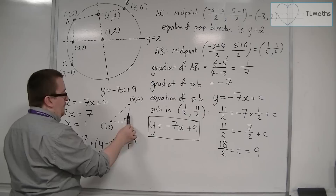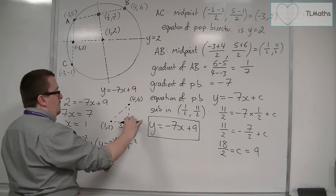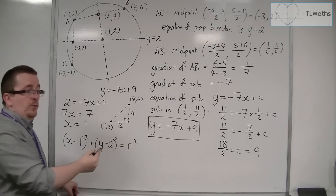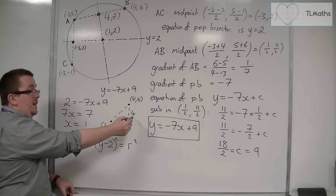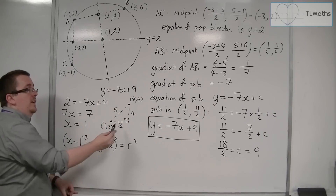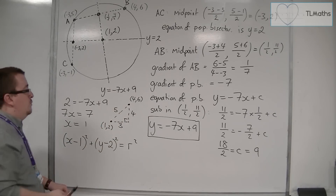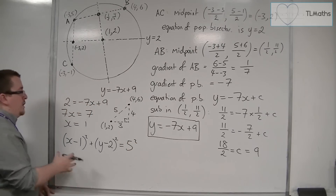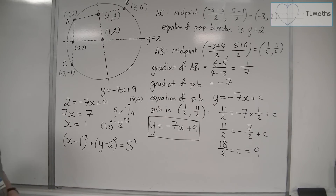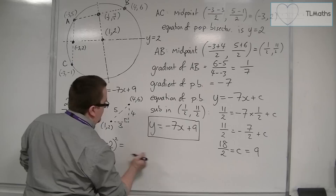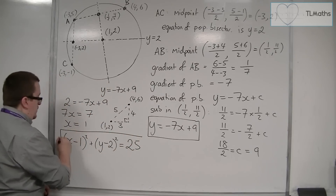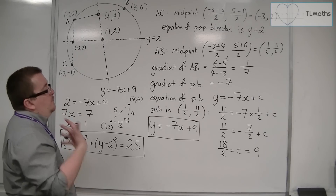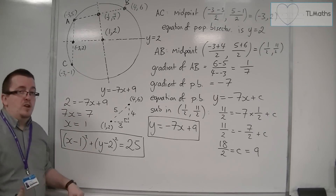From 1 to 4 is 3, and from 2 to 6 is 4. So three squared plus four squared is nine plus sixteen, which is twenty-five. The square root of twenty-five is five — this is a 3, 4, 5 triangle. So the radius of the circle is five, and the equation is x minus one squared plus y minus two squared equals five squared, or twenty-five. In this example, with the more straightforward numbers, you can see the equation is generated much more quickly.